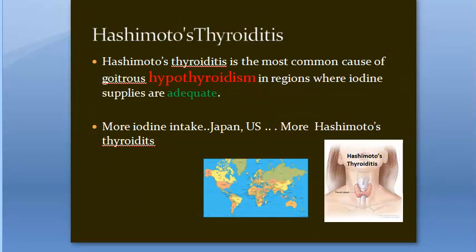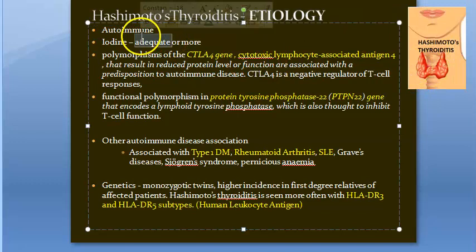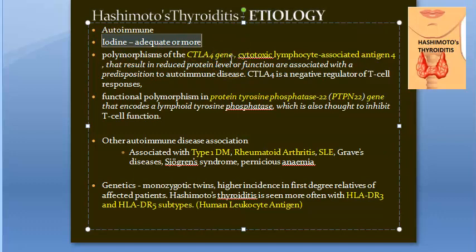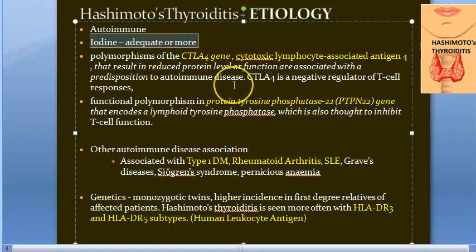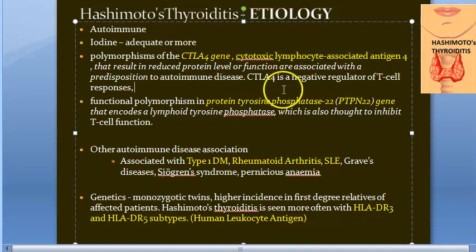Hashimoto's thyroiditis is quite common, even where iodine supplies are adequate or more. The etiology is autoimmune. The genes CTLA4 — cytotoxic lymphocyte-associated antigen — and PTPN22 — protein tyrosine phosphatase 22 gene — will have polymorphisms.